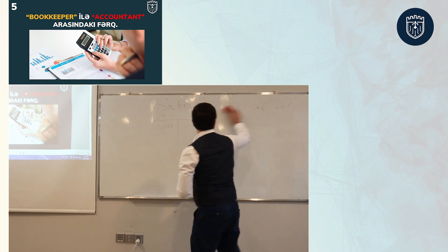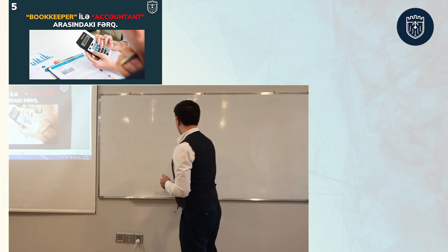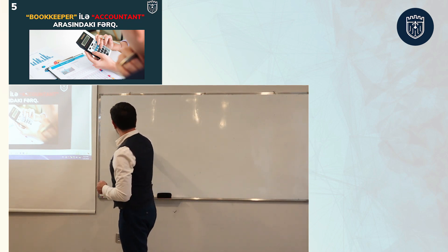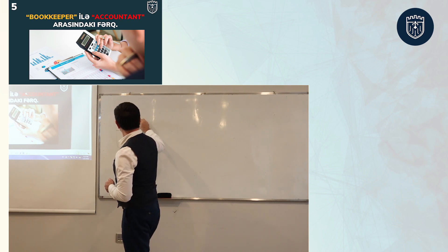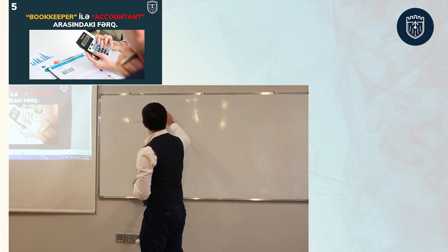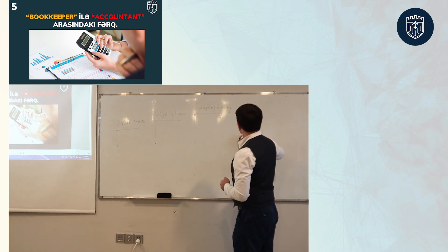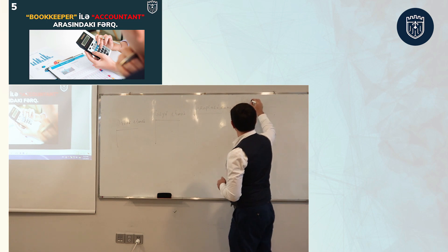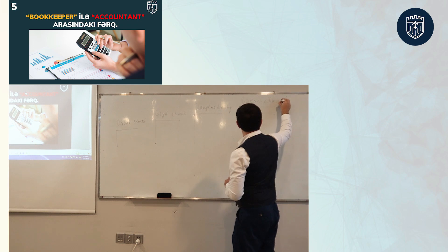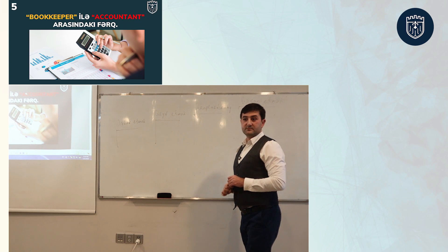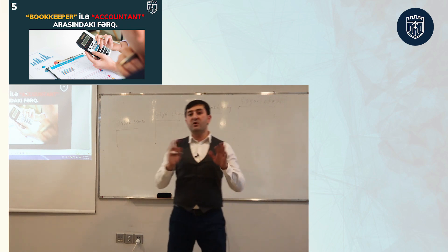Mühasibatlıq prosesləri necə keçirilir? Bir neçə mərhələdir: birincisi aşkar etmək, ikincisi qeyd etmək, üçüncüsü qruplaşdırmaq, dördüncüsü bəyan etmək və ya hesabat vermək.